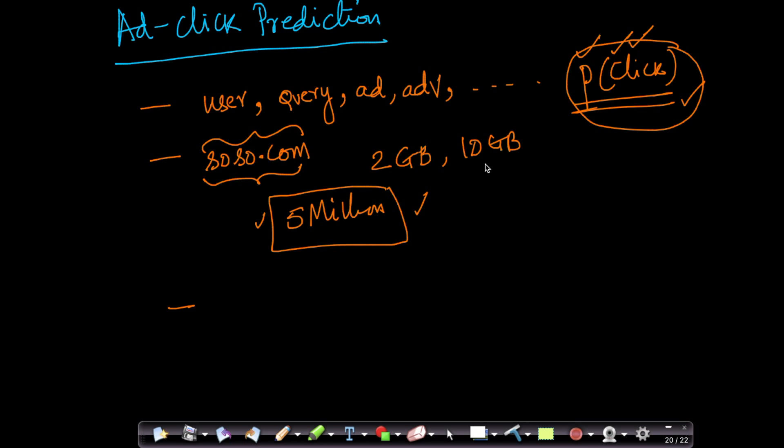You might ask why is ad click prediction so important. Of course, the challenges are there is a large amount of data and there's a lot of interesting signal. And this is how the internet is free. This is the reason why your Google search and your Facebook is free. These 1% improvements in these algorithms could mean billions of dollars of revenue for companies like Google and Facebook. It's a very interesting problem to solve using AI and machine learning and data science.